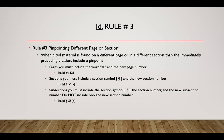Id. rule number three: pinpointing to a different page or section. When cited material is found on a different page or in a different section than the immediately preceding citation, include a pinpoint. For pages, you must include the word 'at' and the new page number — for example, id. at 321. For sections, you must include a section symbol and the new section number — for example, id. § 55A. For subsections, you must include the section symbol, the section number, and the new subsection number — for example, id. § 55D. Do not include only the new subsection number.